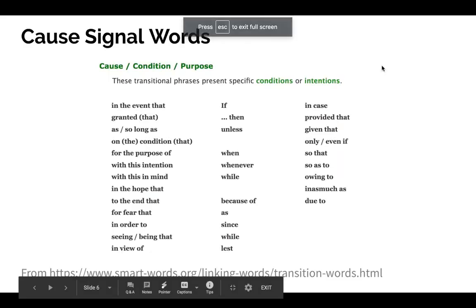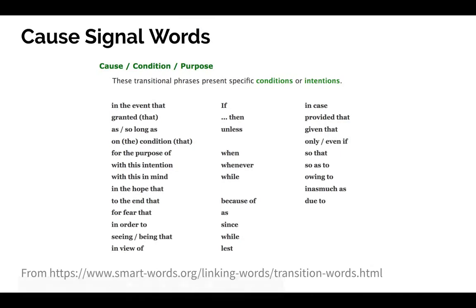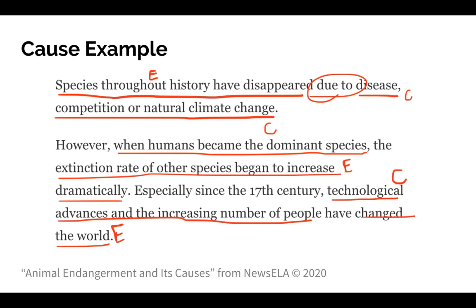Here are your cause signal words. Sometimes you see them in your paragraph and sometimes you don't. In this example, you only see one signal word — 'due to.' That shows you that in this set of paragraphs, it's mostly examining the cause of something.